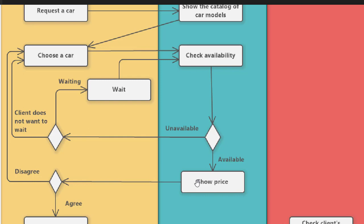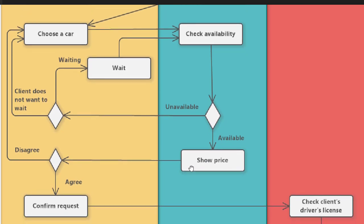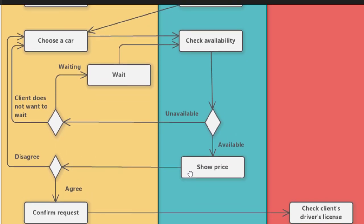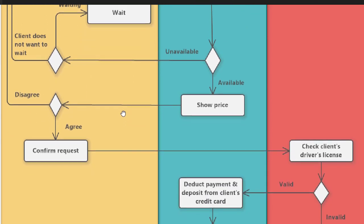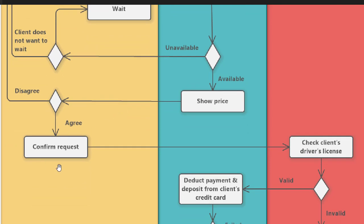If the car was available, the car rental system shows the prices for that car — the price per rent, for how many days or months. When the client sees the price, there is again a condition: does he agree with the price? If he disagrees, he goes back to 'choose a car.' If he agrees, he proceeds.